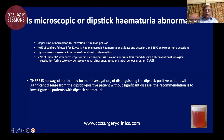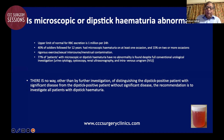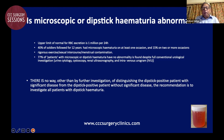Despite full conventional urological investigation — including cytology, cystoscopy, renal ultrasonography, intravenous urography, and CT scanning — 77 percent have no abnormality. Nevertheless, there is no way other than further investigation to distinguish the dipstick-positive patient with significant disease from the dipstick-positive patient without disease. Therefore, all patients with dipstick hematuria must be investigated, even though the results are negative in more than three-quarters of situations.